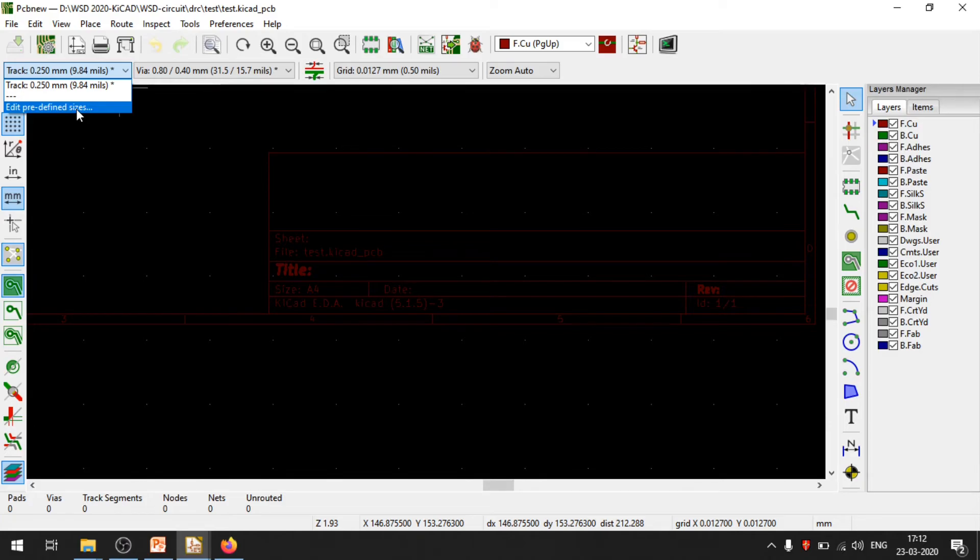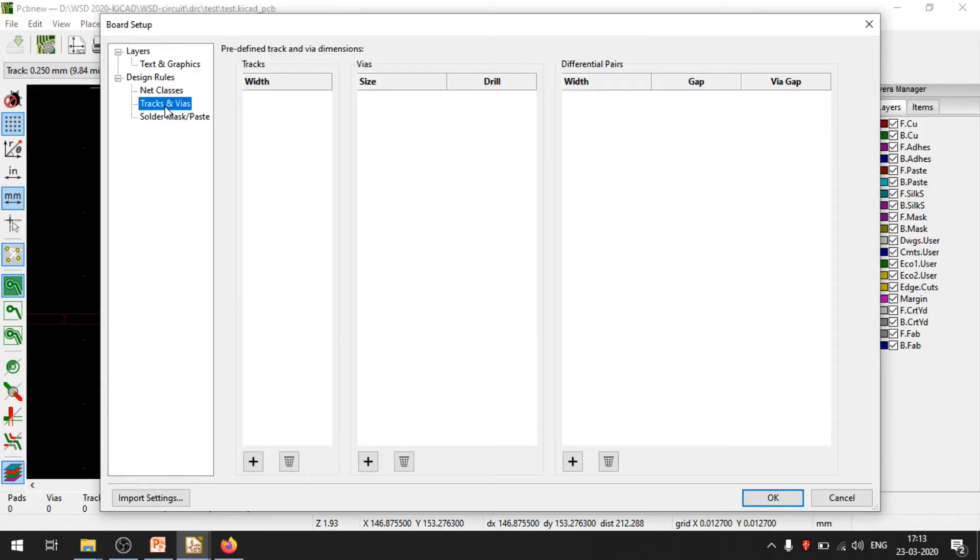You can notice, this is the board setup page. The first one that I see is tracks and vias, which is selected. You can click on add and I can select some track widths. I am looking for a 1 mm track width. I can add another one if I wish to, maybe 1.5 mm.